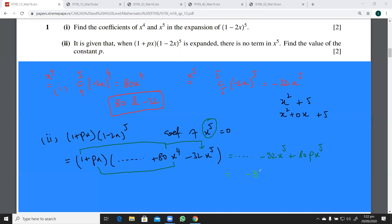(-32 + 80p)x⁵. Now, according to the given conditions, we know that there is no term in x⁵, so this implies that all of this has to be zero. So you put -32 + 80p = 0. So p is 32 over 80, which is 4 over 10, which is 0.4. So this is the required value of the constant p.